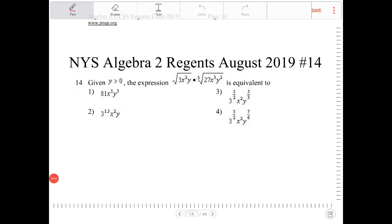Given y is greater than zero, the expression square root of 3x squared times y times cube root of 27x cubed y squared is equivalent to.